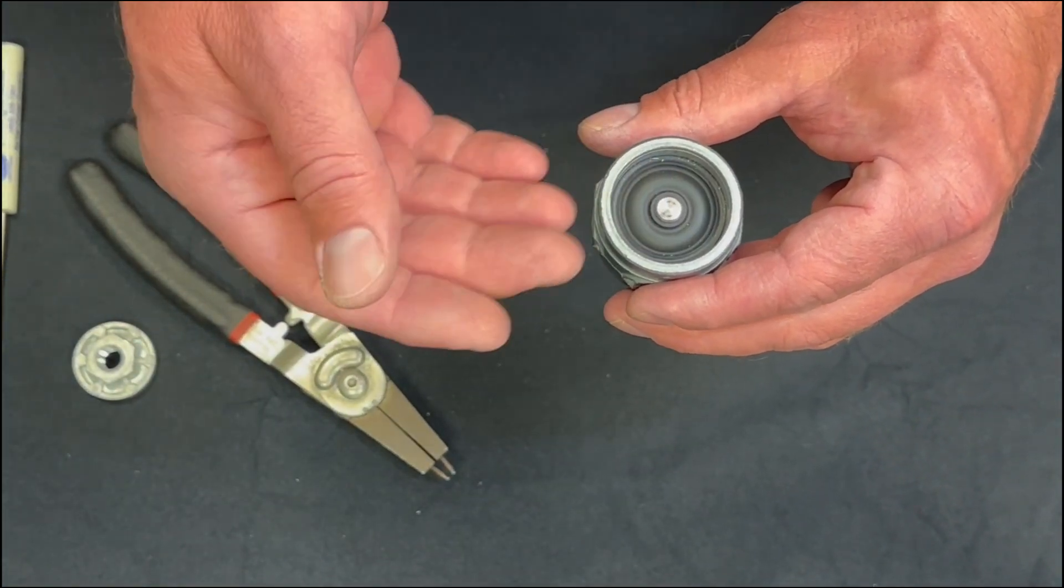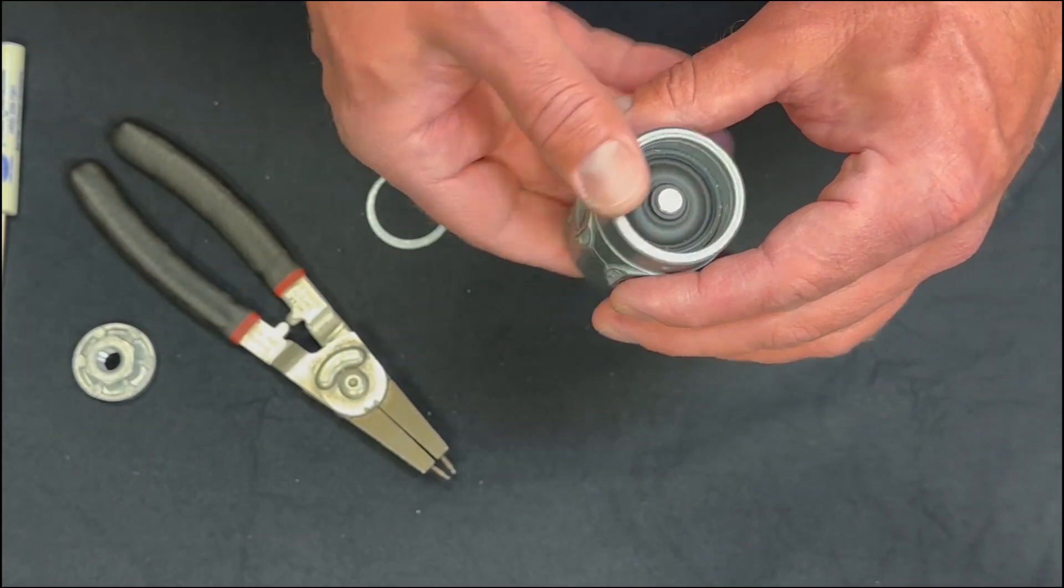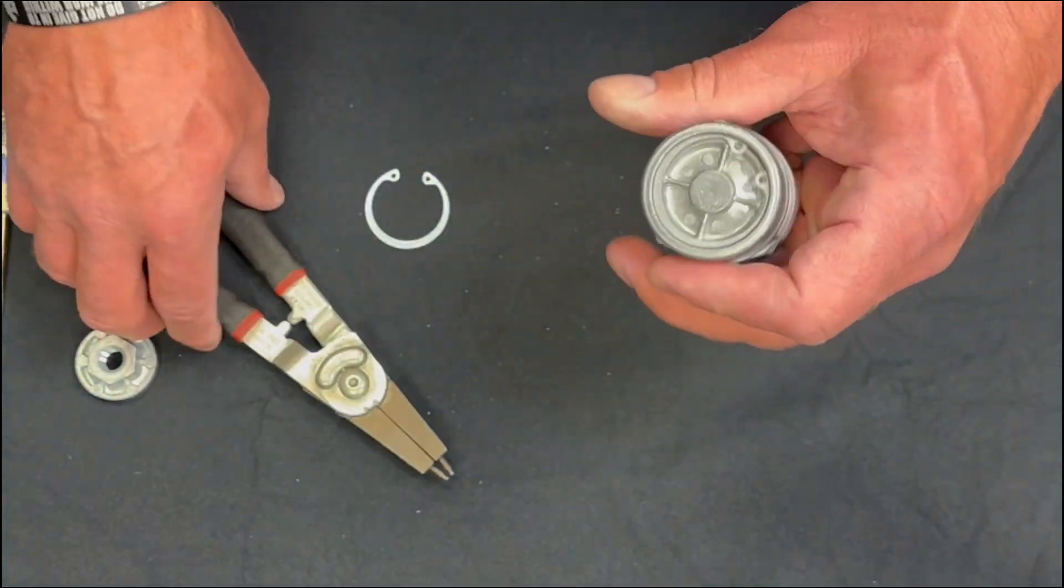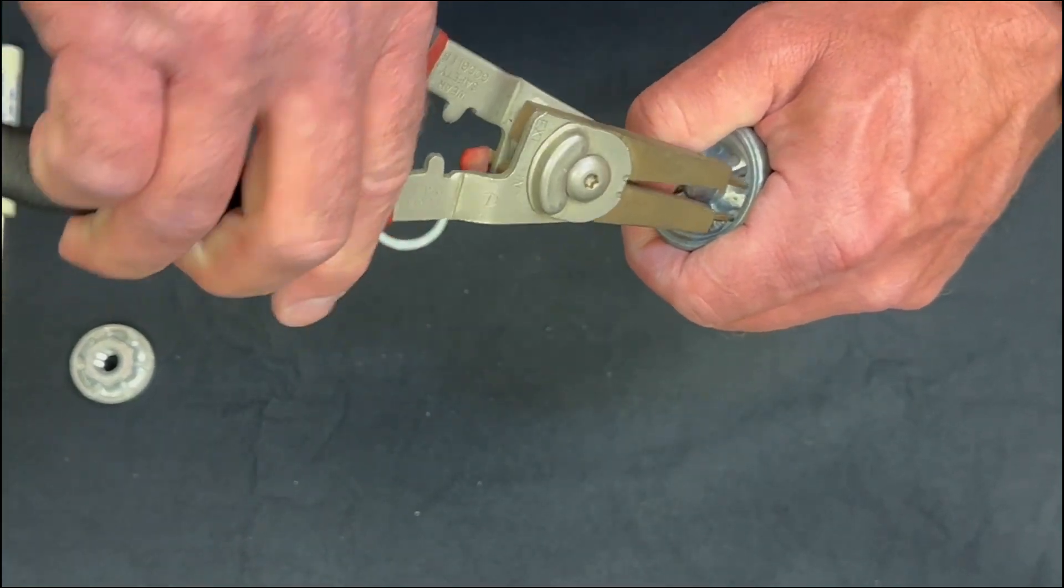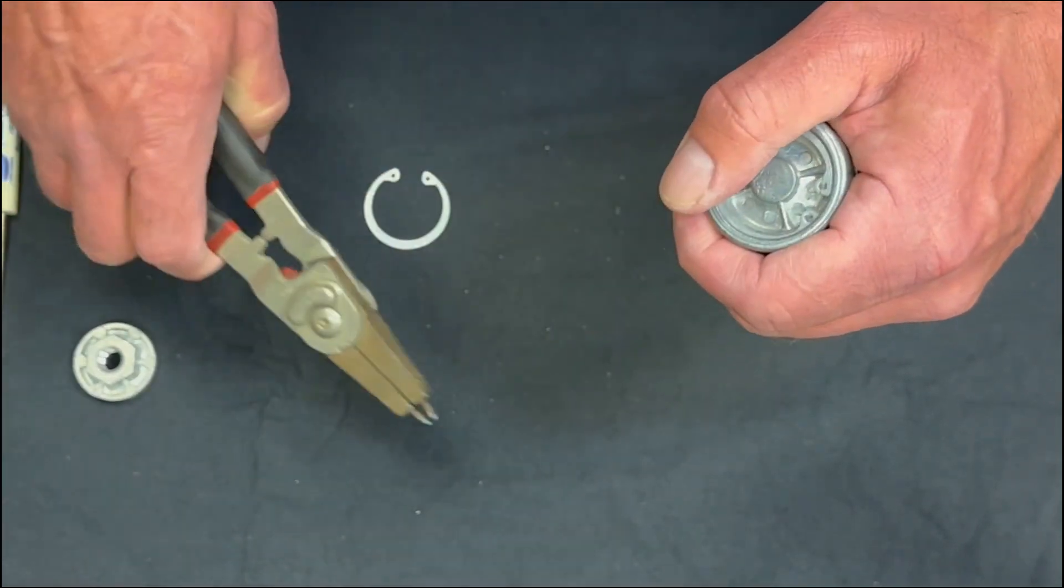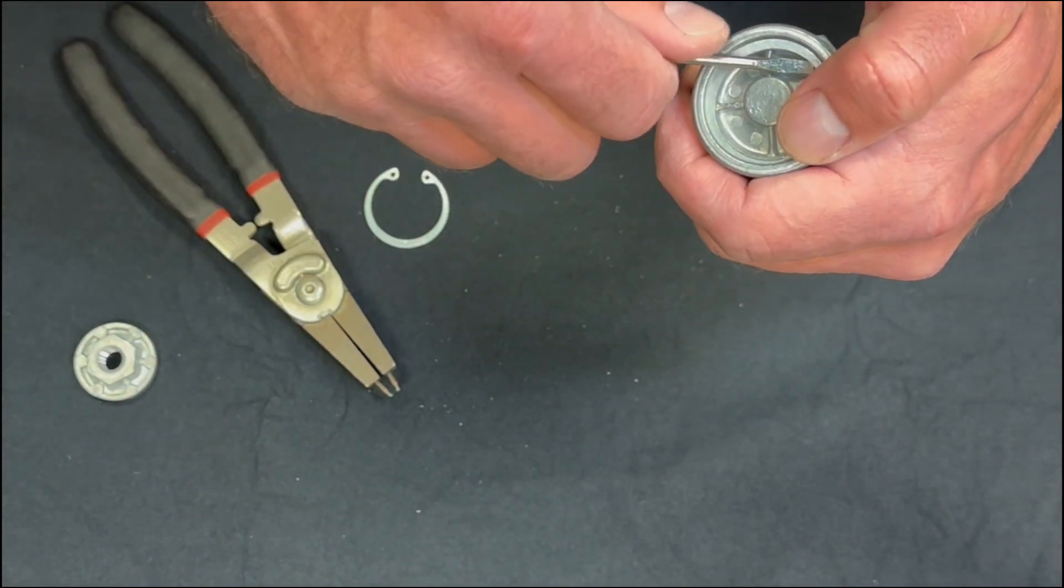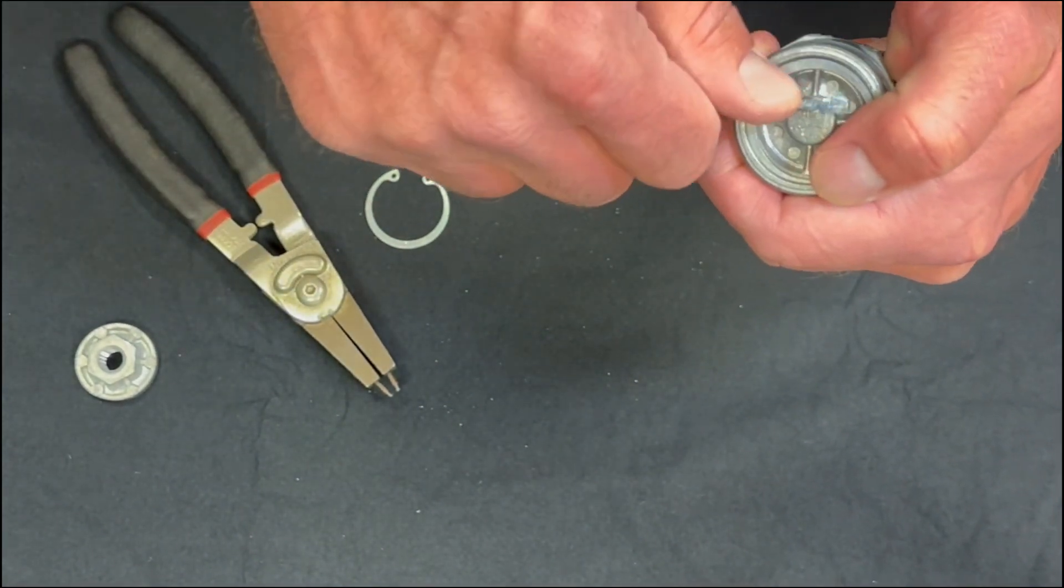If the diaphragm and everything looks good inside, the next thing you can do is flip it over and remove the snap ring on the bottom portion of the pilot valve as well, maintaining the same procedure as the top so that you don't lose the snap ring.